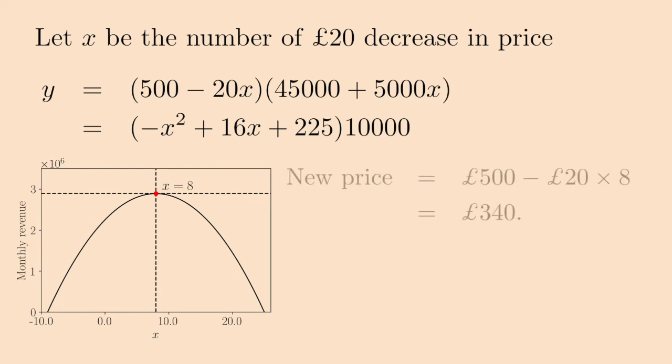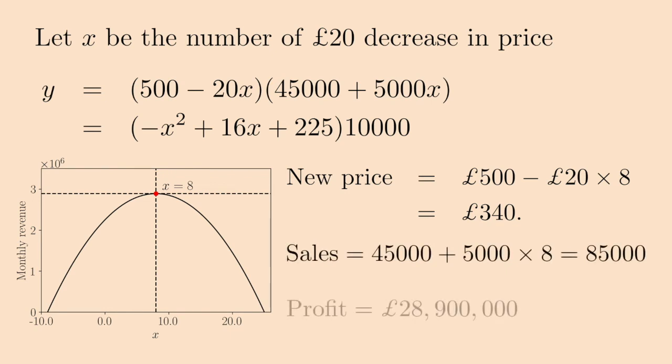Therefore, to maximize the monthly revenue, the company should sell each handset at the price of £500 minus 20 times 8, that is £340. At this price, they will be able to sell 45,000 plus 5,000 times 8, that is 85,000 handsets, for a maximum profit of £28,900,000.